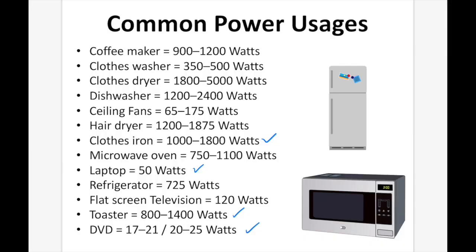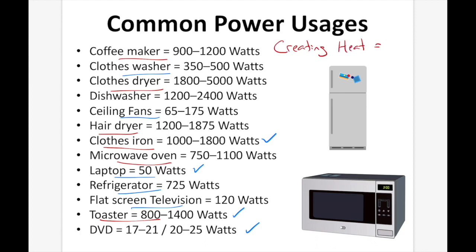The high usage items — the dryer, coffee maker, hair dryer, clothes iron, oven, and toaster — are all things that generate heat. Whereas things like the washing machine, ceiling fans, refrigerator, laptop, and TV don't generate heat and have much lower power. So we can say that creating heat equals high power usage.